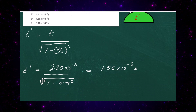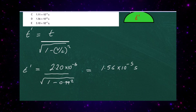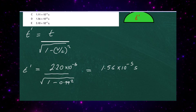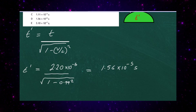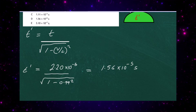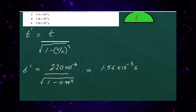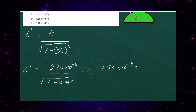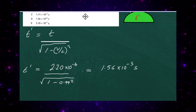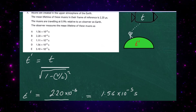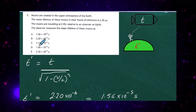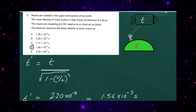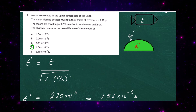We put in the numbers: T' equals 2.20 — remember, it's a microsecond, so we put times 10 to the minus 6 — divided by the square root of 1 minus 0.99 squared, since the C's cancel out. Using a calculator, we get a value of 1.56 times 10 to the minus 5 seconds, which corresponds to letter D. So for question 7, the answer is D: 1.56 times 10 to the minus 5 seconds.